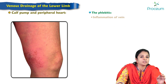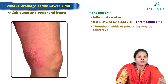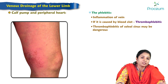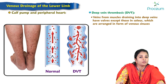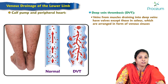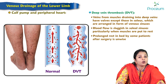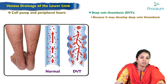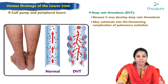The soleal sinuses are common sites for thrombosis and a source of pulmonary embolism in sedentary individuals. Phlebitis means inflammation of the vein; when caused by a blood clot it is called thrombophlebitis. Thrombophlebitis of the soleus sinus may be dangerous because the spread of infection can damage the valves in the perforators. The veins from muscles draining into deep veins have valves except those in the soleus, arranged as venous sinuses. Blood flow is sluggish in the soleal sinuses when muscles are at rest, so prolonged bed rest after surgery is unwise as it may cause deep vein thrombosis leading to life-threatening pulmonary embolism.